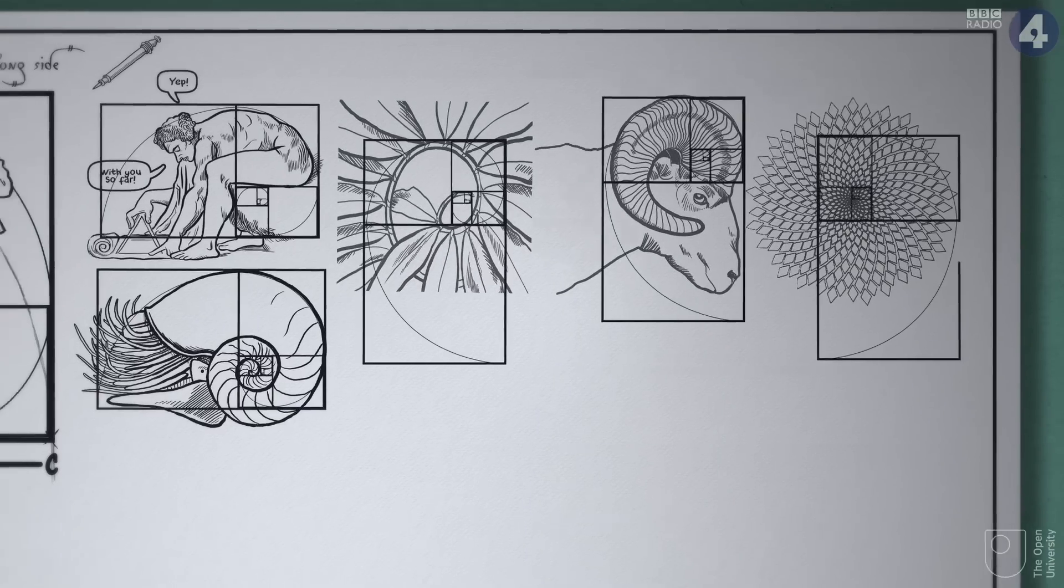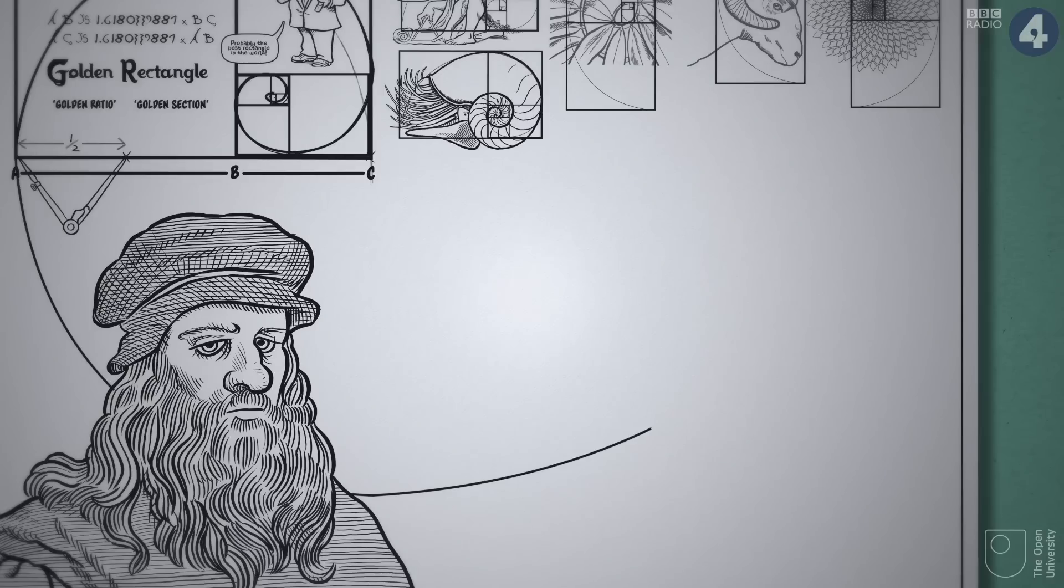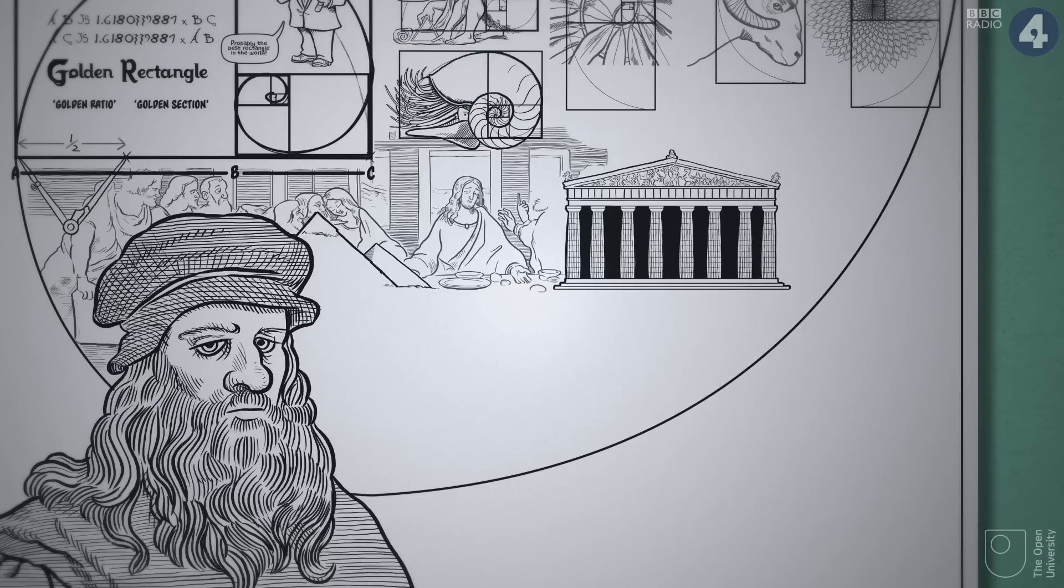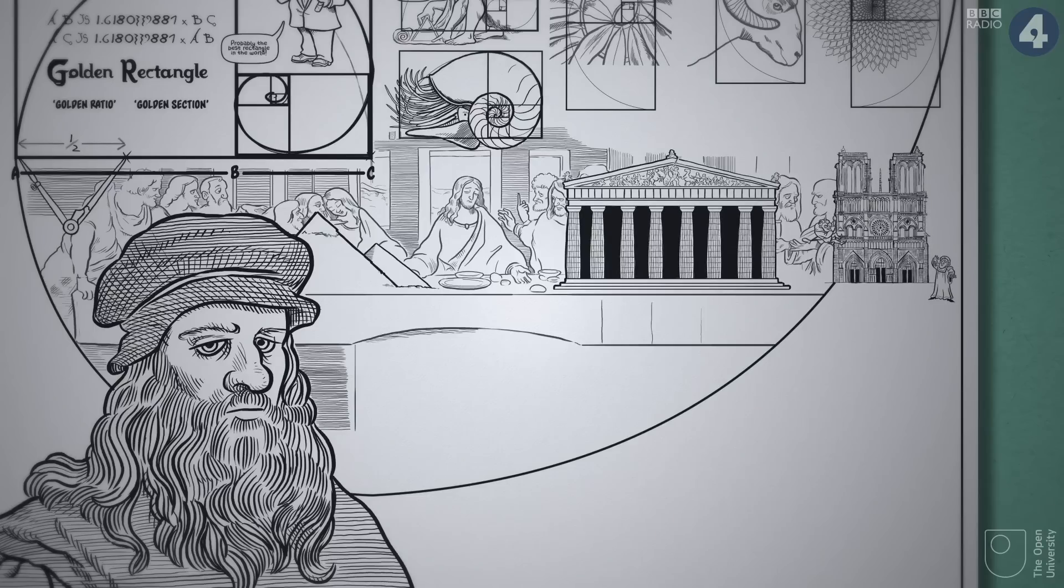The golden ratio isn't just found in nature. Artists and architects have knowingly used it for thousands of years. Parts of the Parthenon and Notre Dame Cathedral seem to be based on it.